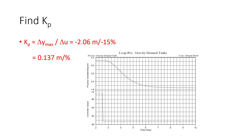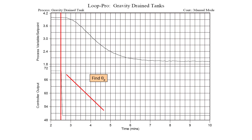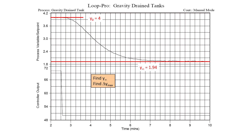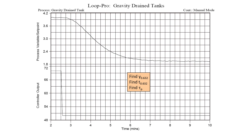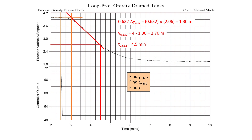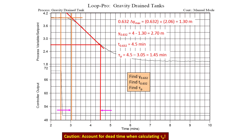Let's practice with the gravity drain tanks. For this system, k_p equals 0.137 (delta_y over delta_u). Next, find theta_p using the tangent method, locating it between the two reference points. Then identify delta_y and find tau_p. Remember to account for dead time when calculating tau_p — do not include theta_p inside the tau_p calculation.